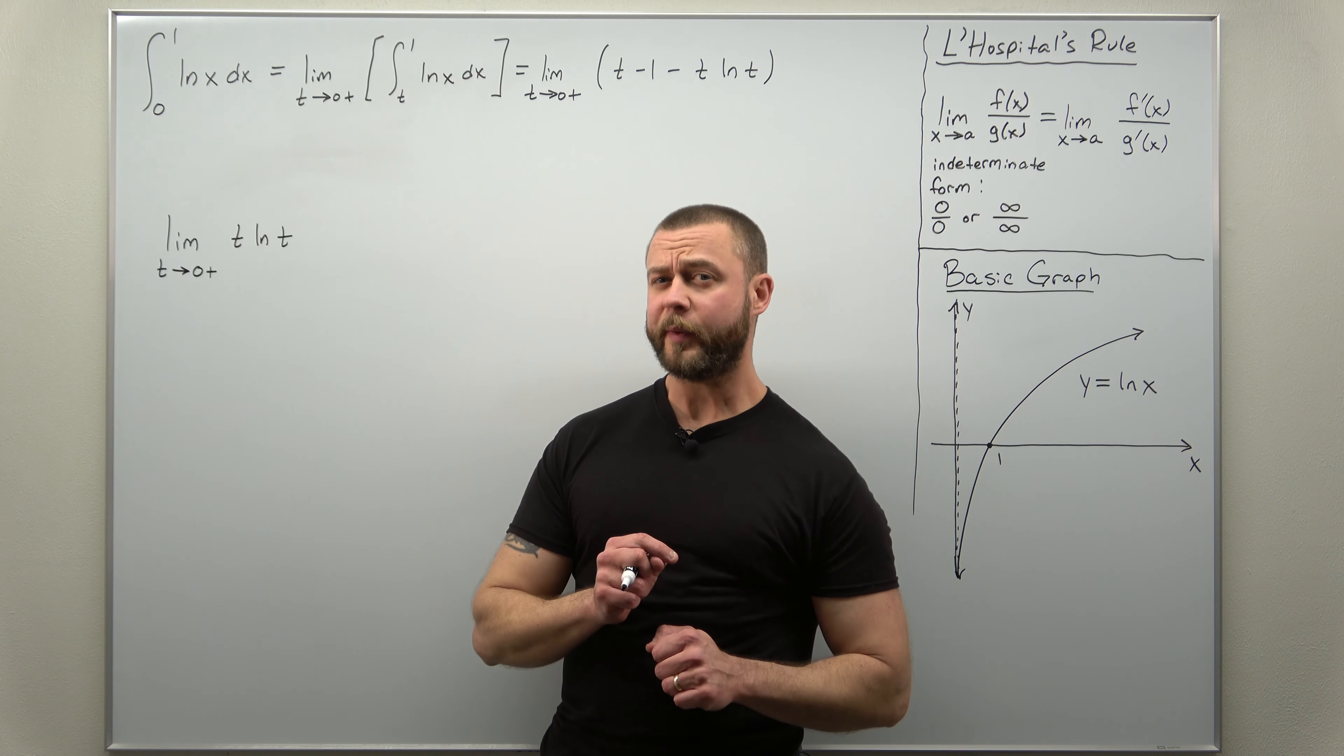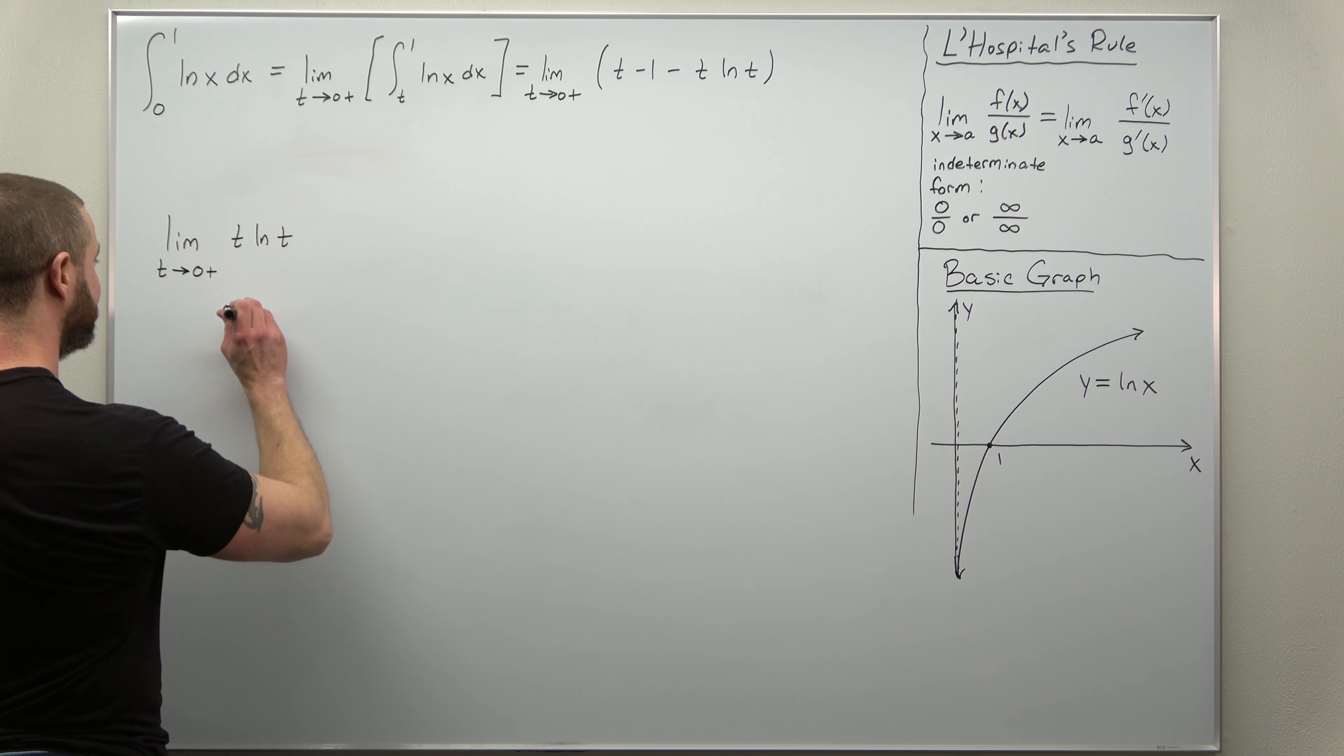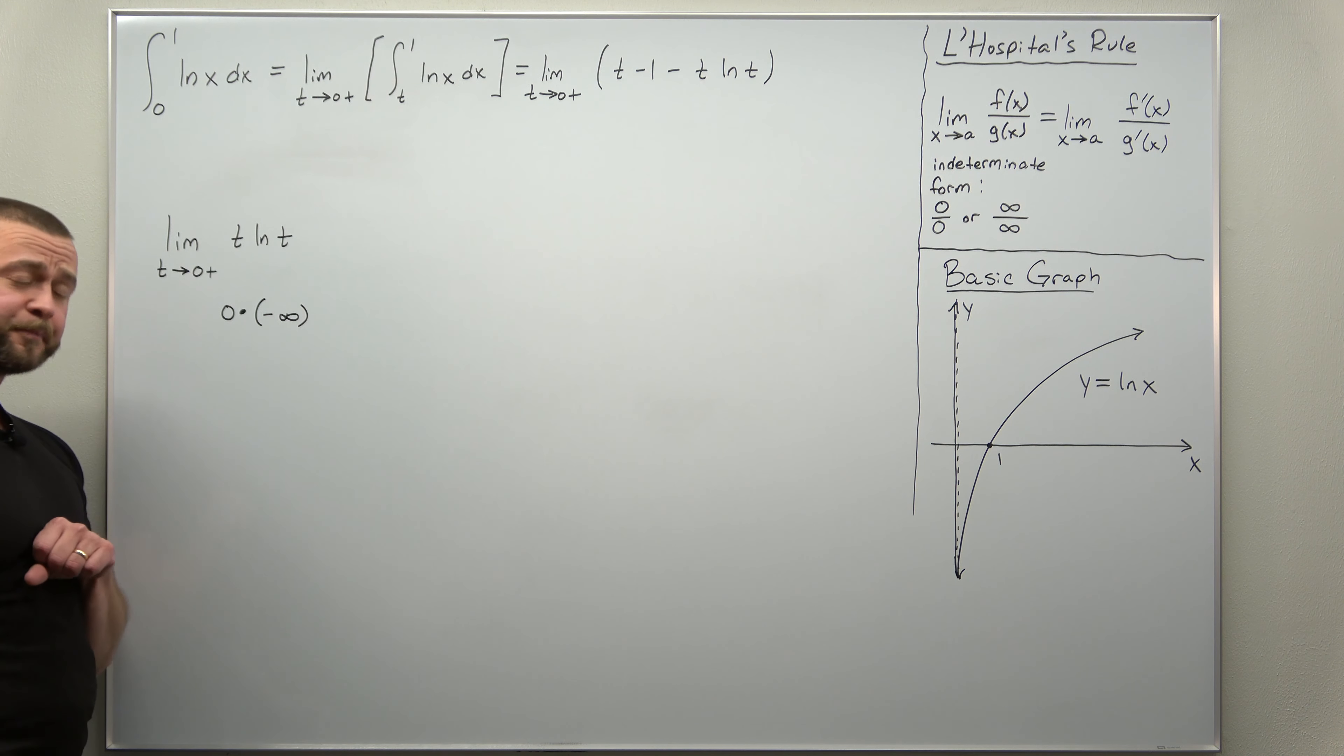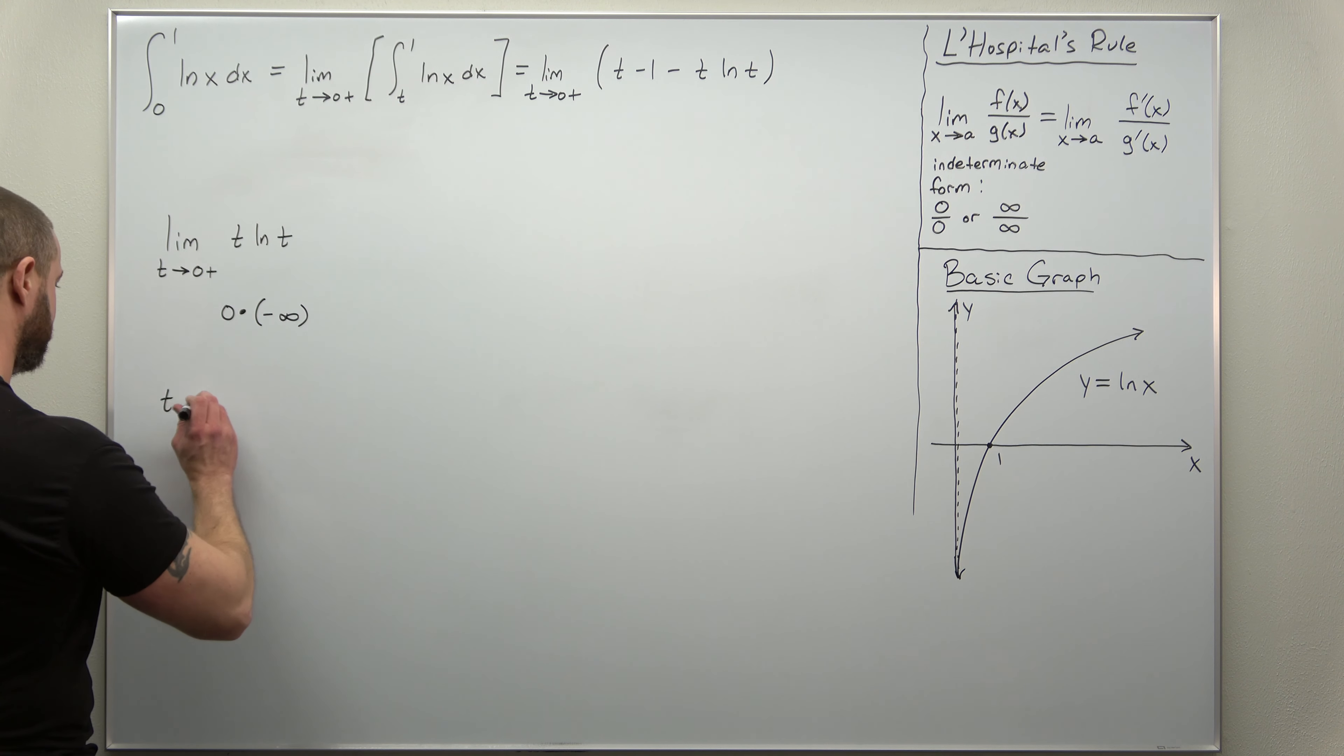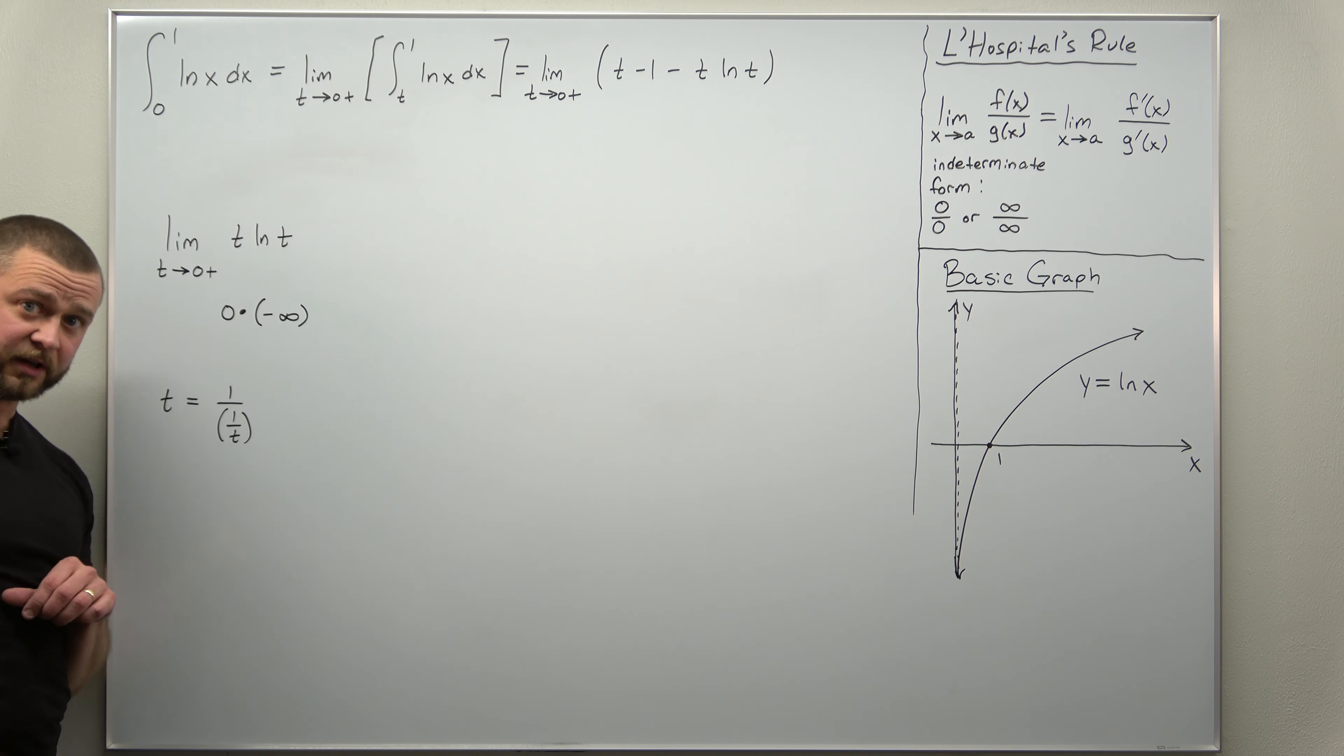Up next, L'Hopital's rule. Now, we already mentioned this limit is an indeterminate form of type 0 times an infinity, 0 times negative infinity. Now, we need to rewrite this as a fraction in order to apply L'Hopital's rule. And we don't have a lot of options here, but we're going to think of t as 1 divided by 1 over t. Make sure you're okay with that. That's kind of some basic algebra. When you divide by a fraction, it flips. So you're more probably comfortable simplifying that 1 divided by 1 over t back to t, but we're using it in the opposite direction.